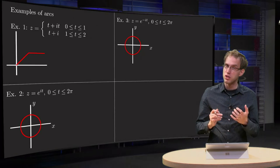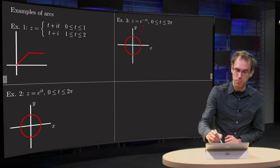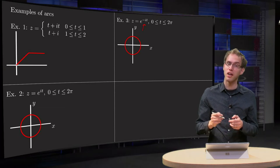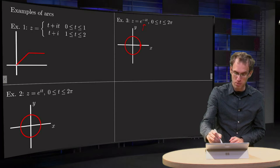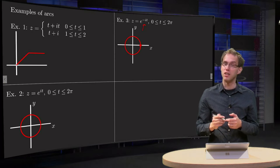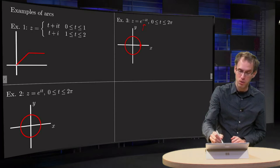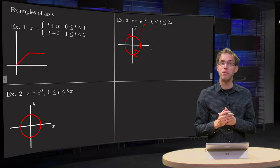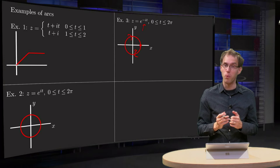We can do a similar one by putting z equals e to the power of minus i t. Again the norm of z equals 1, so we are on a circle again. We start at 1, but now if t increases we go the other way around. We go clockwise and again once around until we are at e to the power of minus 2π i equals 1 again.